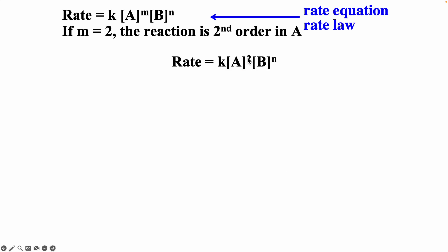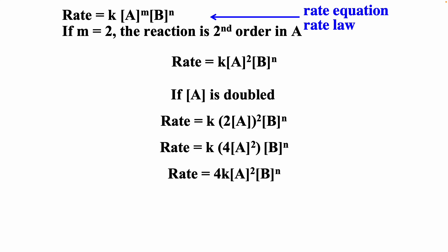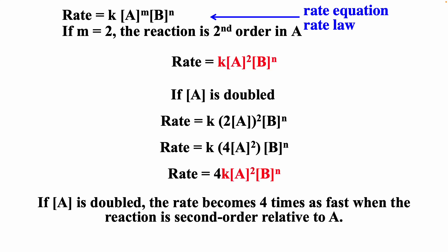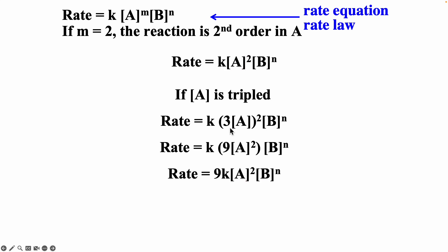If m equals 2, the reaction is second order with respect to A. If we double A, both the 2 and the concentration get squared, giving us 4 — the rate will be four times as fast. So if it's second order and you double the concentration, the rate will be four times as fast. If we triple A, both the 3 and the concentration get squared, and the rate will be nine times as fast.